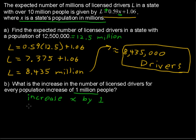So it's an increase. What is the increase? It already says increase. We have an increase of 0.59 million licensed drivers for every time we increase the population by 1 million.